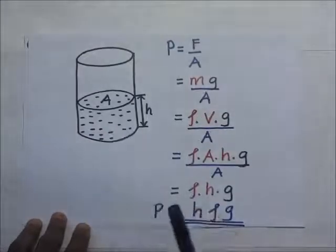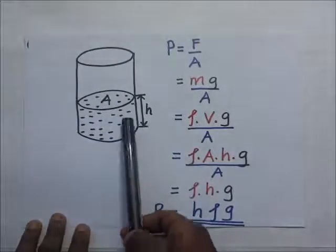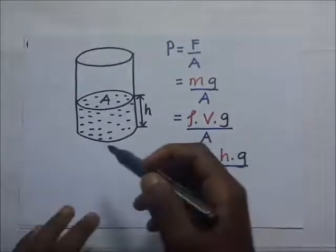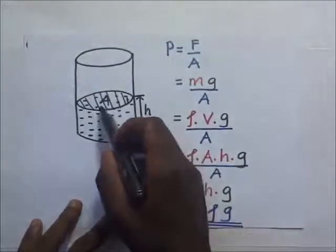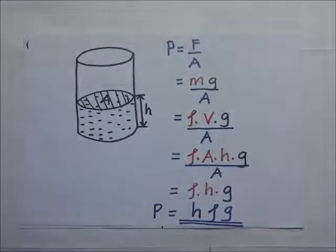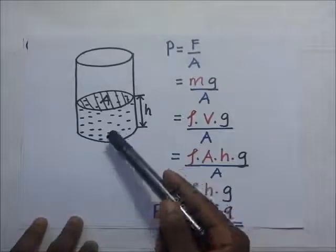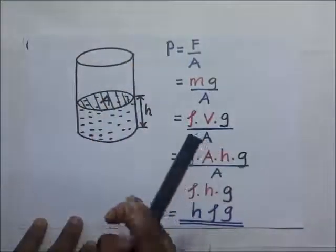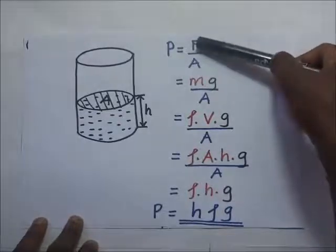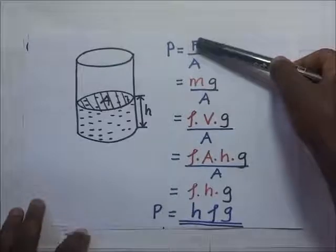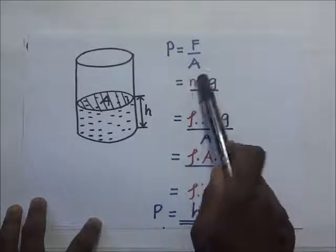We are going to use that exact formula to help us derive pressure in liquids. We have a can containing water with a cross-sectional area A at the top surface. This water column has weight, and that weight exerts a certain pressure at the bottom of the can. So pressure exerted by this water is force over area, and the force is the weight of the water, which equals mass times gravity.